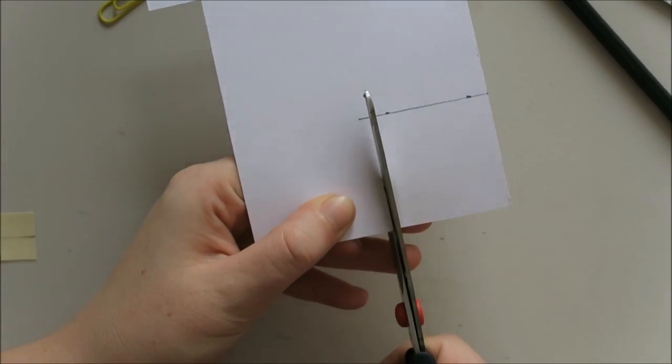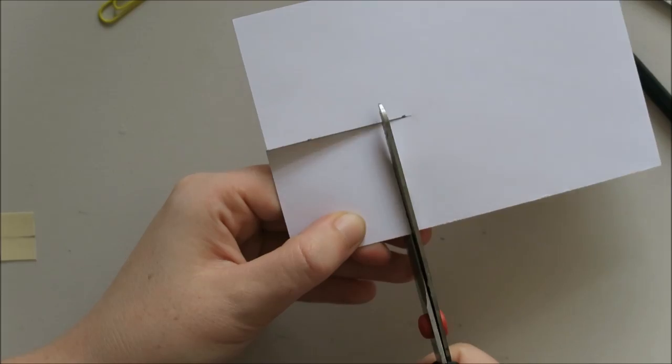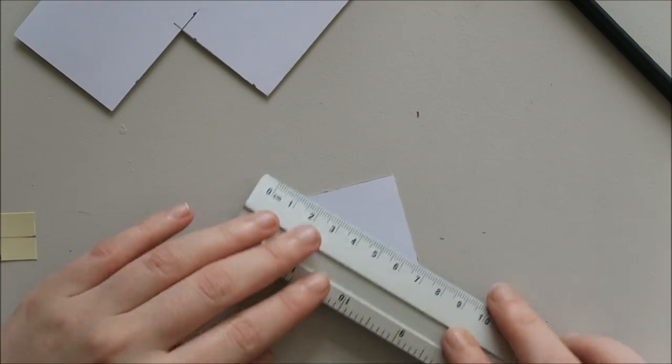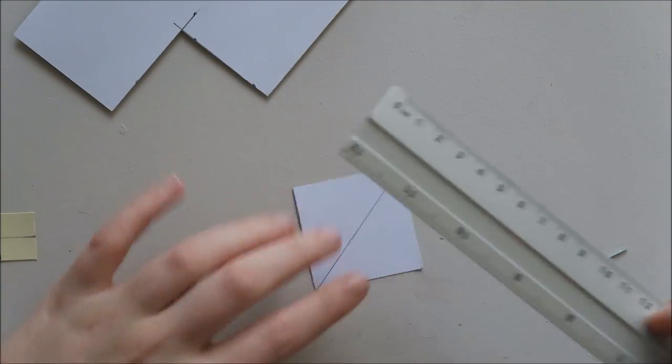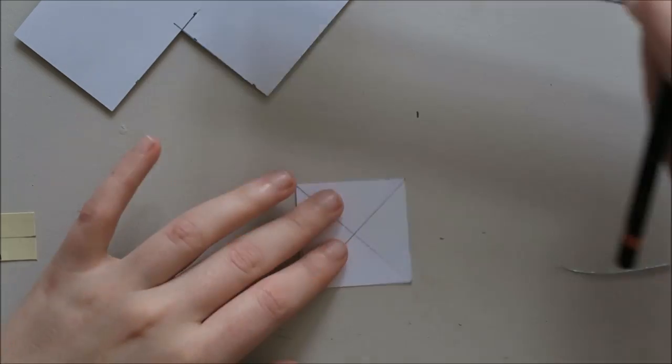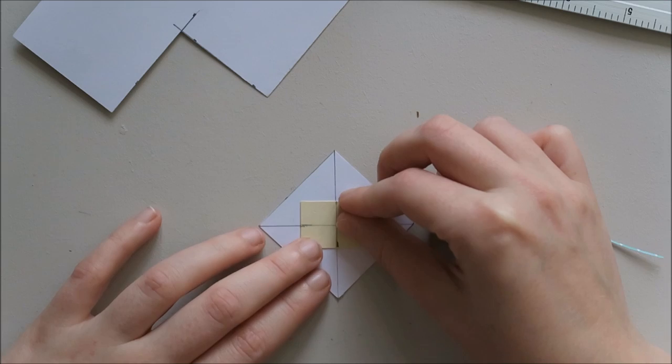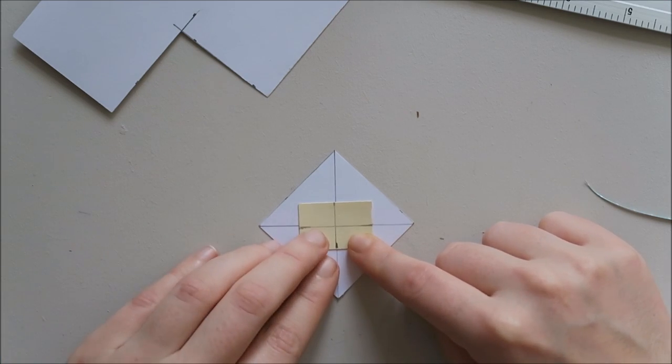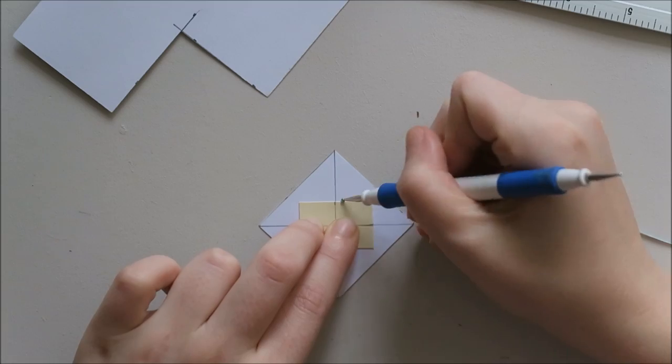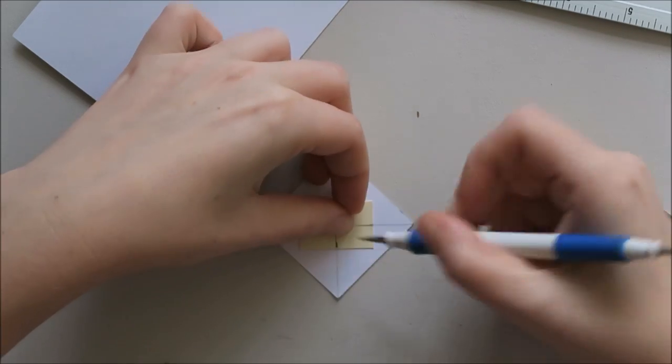Now I cut it out again. Maybe I should invest in a paper trimmer. I don't know. I think I can cut straighter with a paper trimmer. I line it up again and make the score lines again. I had some trouble to keep it in place because it's really small.